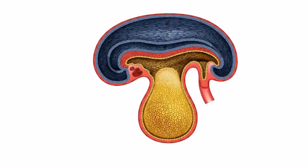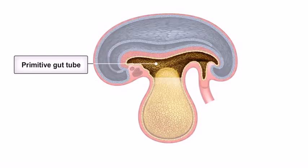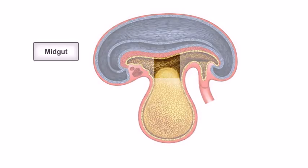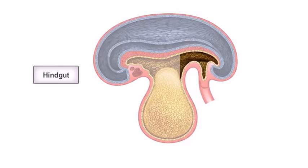incorporating the dorsal part of the yolk sac to create the primitive gut tube. The primitive gut tube differentiates into three main parts: the foregut, midgut, and hindgut.